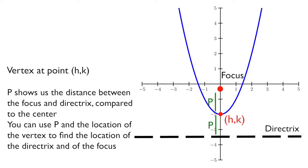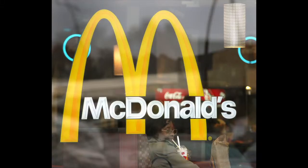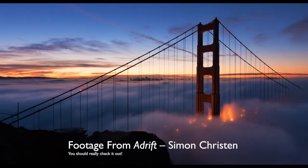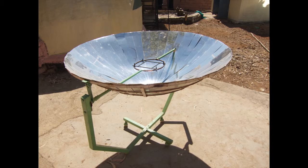Parabolas are almost everywhere you look. They can be found in McDonald's arches, the Golden Gate Bridge, in satellite dishes, solar cookers in the developing world, and even in the Death Star.